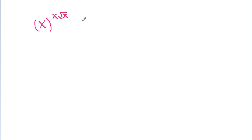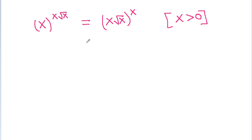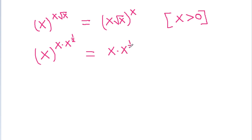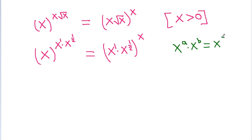We have x^(x√x) is equal to (x√x)^x. Since x is greater than 0, we can write √x as x^(1/2), so the left side is x^(x · x^(1/2)), and using x·x^(1/2) = x^(1) · x^(1/2) = x^(1 + 1/2), which gives x^(3/2).